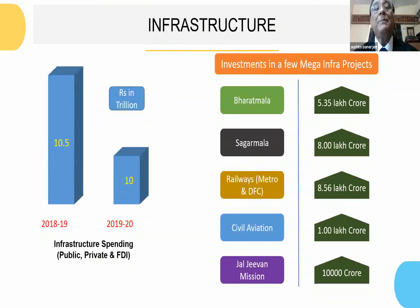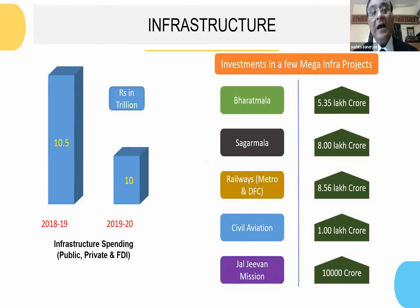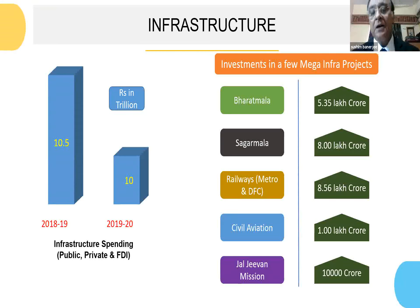The infrastructure sector has been predominated by mega schemes announced by the government, like Bharat Mala for road connectivity, Sagar Mala for port connectivity, railways, metro and dedicated freight corridors, civil aviation, and Jal Jeevan Mission for supply of drinking water to each and every household. The right-hand side chart gives the total investment that has been allocated.